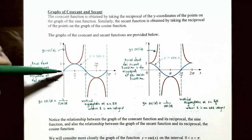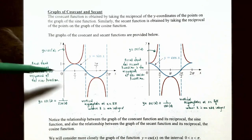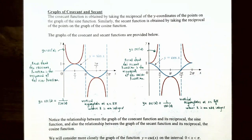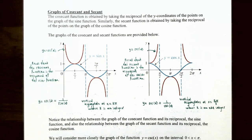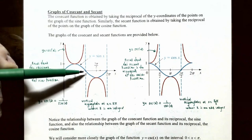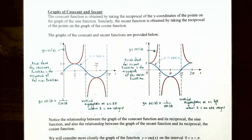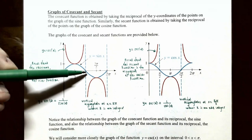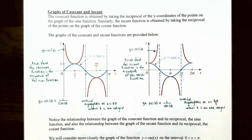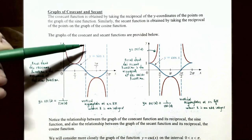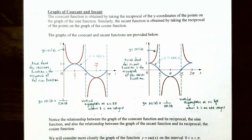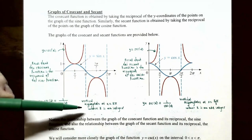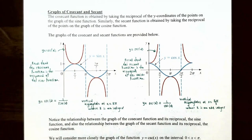Now let's talk about the reciprocals to actually graph the cosecant function. If you take the reciprocal of the output value of 0 for the sine function, the reciprocal of 0 is undefined, so we have a vertical asymptote at x equals 0 for the cosecant function. For the same reason, at x equals π, which is an x-intercept for the sine function, the reciprocal of 0 is also undefined, so the cosecant function has a vertical asymptote at x equals π, and also at x equals 2π. The cosecant function will have vertical asymptotes of the form x equals k times π, where k is an integer.